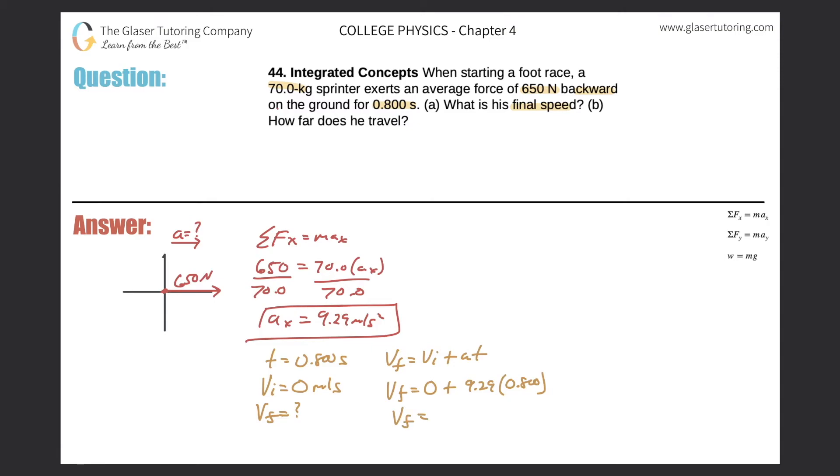So easy enough. Easy peasy here. So 9.29 times 0.8. So this is great, 7.43. So we get 7.43, and that is meters per second. Wunderbar. Now what we can do, so we found the final velocity. That's his final speed.